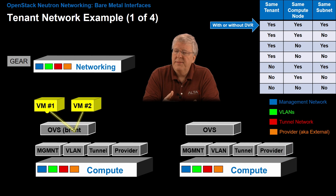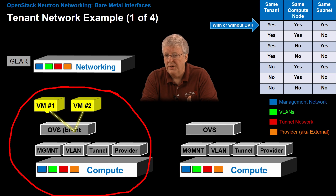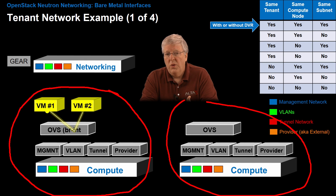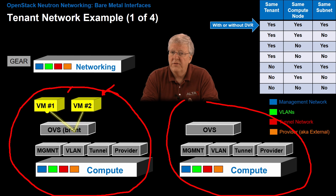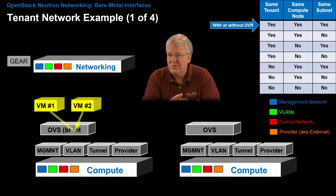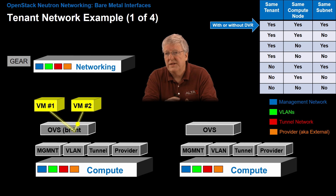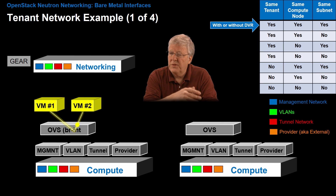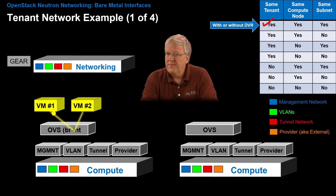Let's take a look at that same diagram at a higher level, because it might be interesting to introduce the fact that there might be more than one compute node — in fact there would be many of them. What if I have two virtual machines running on the same compute node? The traffic flow is tremendously efficient. If these two virtual machines are talking to each other, the traffic stays on the same compute node, staying within the integration bridge, never leaving. Both the source and destination are the same tenant, on the same compute node and the same subnet.